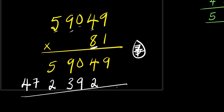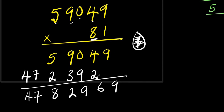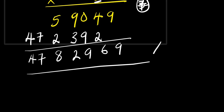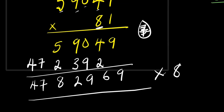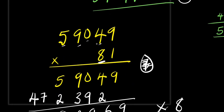Adding the rows: we get nine, six, nine in the units section; carry one; that gives us eight. Combining everything, we have four million, seven hundred and eighty-two thousand, nine hundred and sixty-nine. So fifty-nine thousand and forty-nine times eighty-one equals four million seven hundred eighty-two thousand nine hundred and sixty-nine.